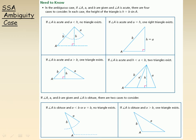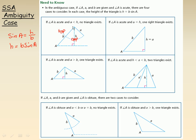I write: sine of angle A equals opposite H over hypotenuse B. Cross-multiplying, H works out to be B·sin(A). That's the height — this vertical distance. Now, if A is smaller than that height, no triangle exists. On the right, if A equals H, then there's only one triangle you can draw, and it's a right triangle.